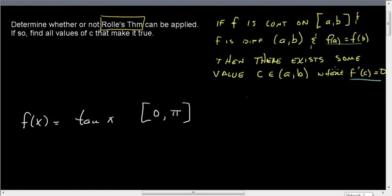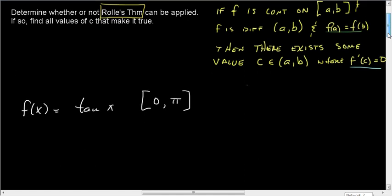So let's take a look at this. First thing is, is f continuous on [a, b]? Now, if you're like me and you don't really remember your trig functions that well, I tend to remember sines and cosines and let it be at that. Well, tangent x is the same as sine x over cosine x.